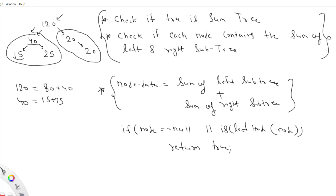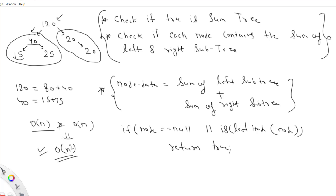In this top-down approach, for each node we calculate the sum of all nodes in the left subtree and all nodes in the right subtree. If there are n nodes, computing the subtree sum takes O(n) time, and we do this for every node. So the overall complexity of this approach is O(n²).